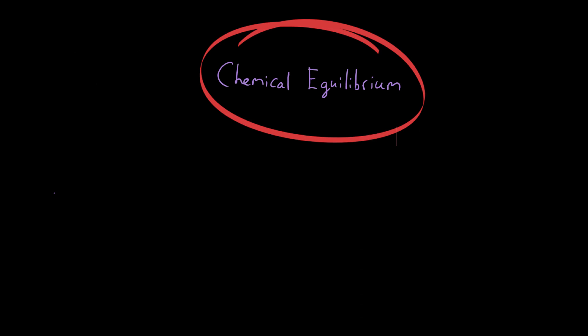In this video we're going to speak about chemical equilibrium, which is very much related to reversible reactions. Let's recap with an example: nitrogen and hydrogen make ammonia. Balancing gives us N₂ + 3H₂ ⇌ 2NH₃. You'll notice I've drawn a double-headed arrow because nitrogen and hydrogen make ammonia, but ammonia itself can break down to make hydrogen and nitrogen. This arrow tells you the reaction is reversible - we can go forwards and backwards.